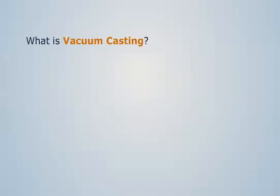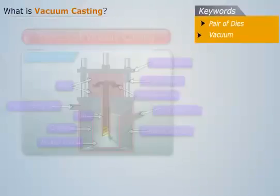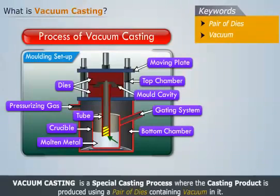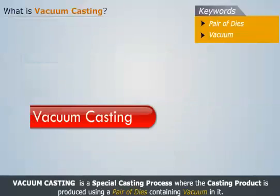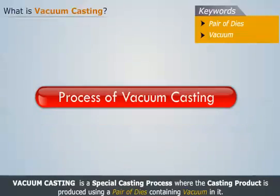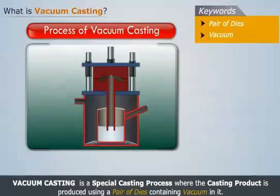Casting. Vacuum casting is a special casting process where the casting product is produced using a pair of dies containing vacuum in it. Let's understand this process with the help of an example.